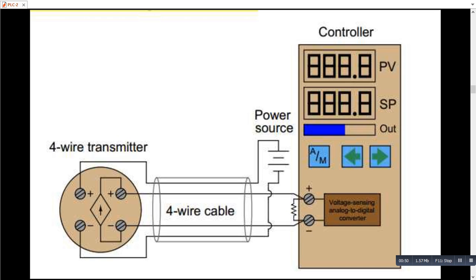If we have the power source at the control room side then we would have to install a four core cable in which two cores would carry the power and the other two cores would carry the signal. So this is how a four wire transmitter works with the power source at the control room side.